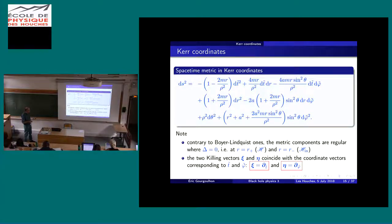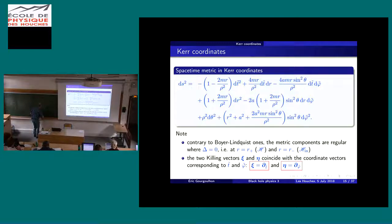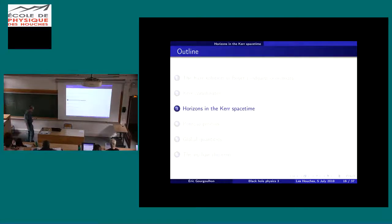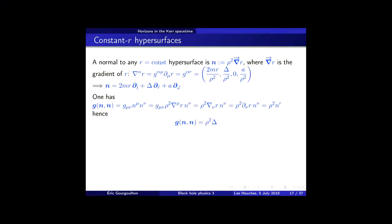Another remark: just as in Eddington-Finkelstein, the killing vector xi can be written as the coordinate vector of the new tilde time coordinate. Similarly, the second killing vector eta, d/d-phi, is also d/d-phi-tilde, simply because nothing depends on t-tilde or phi-tilde in this metric. Let's look further at the two hypersurfaces H and H-inner.